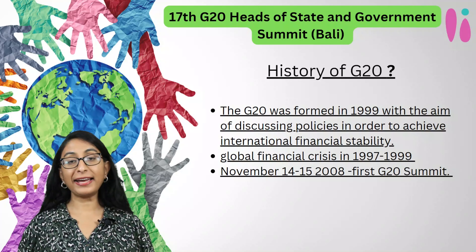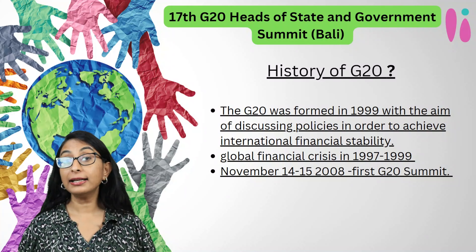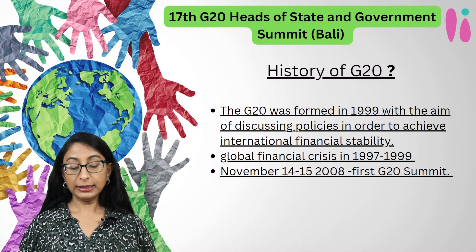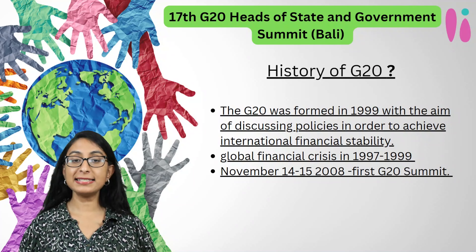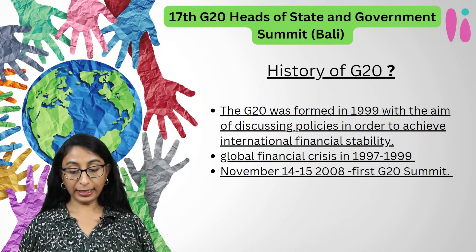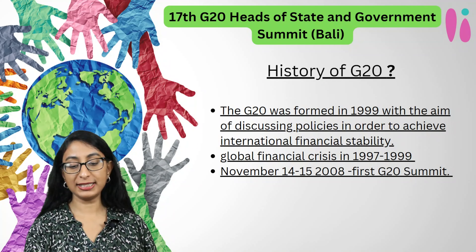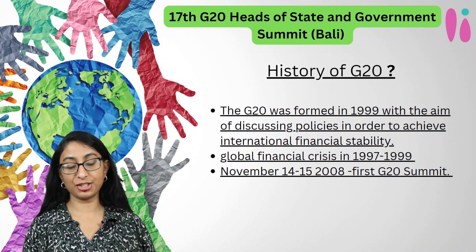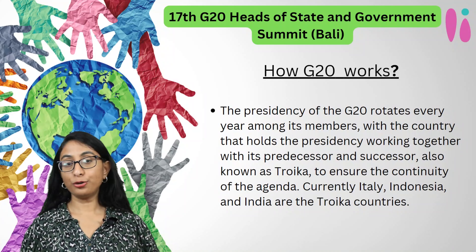In 2008, the leaders of the G20 countries began meeting on the occasion of the global response to the financial crisis that occurred in the US. Since then, the summit has been held every year without fail. The first-ever G20 summit was held on November 14th to 15th, 2008.